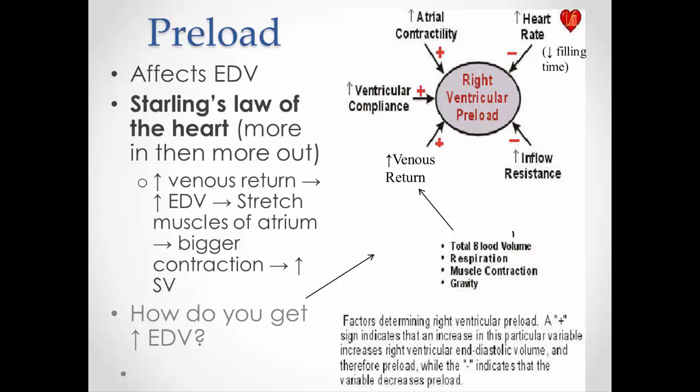So if I increase venous return — that is, I bring more blood to the heart, more blood through the veins into the heart — that means I increase end diastolic volume. I have more blood in the ventricles. That stretches the muscle in the atriums as well as the ventricles, and I get a bigger contraction, and therefore a bigger stroke volume. Increased venous return is going to have a positive effect on preload or end diastolic volume.